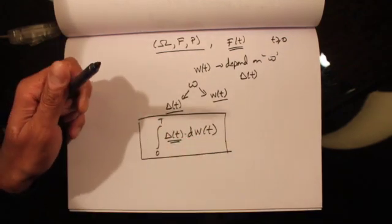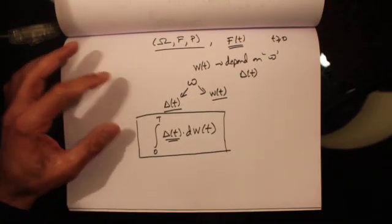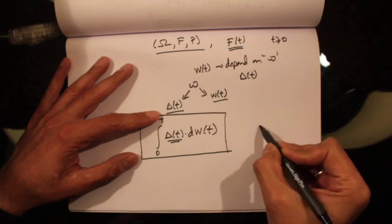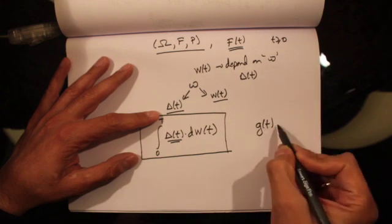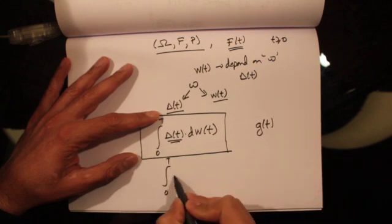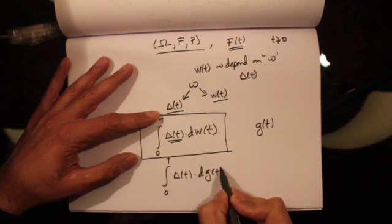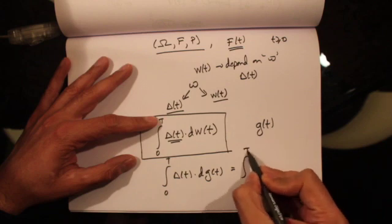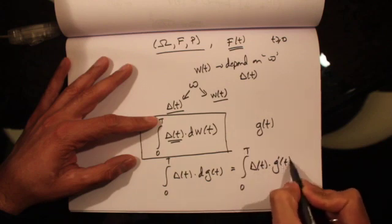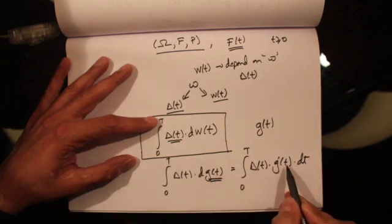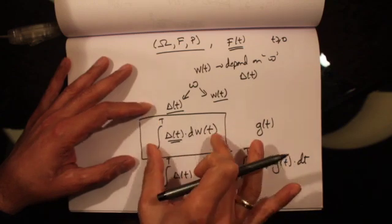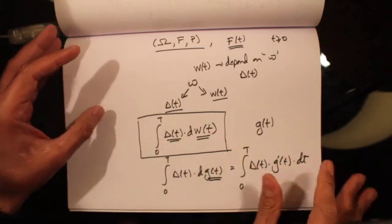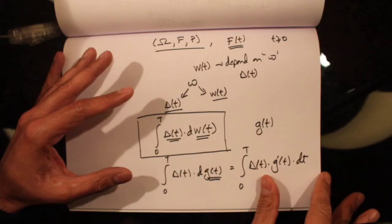In ordinary calculus, if we had a differentiable function g(t) and wanted to compute the integral from 0 to t of delta(t) dg(t), we could compute it as the integral of delta(t) g'(t) dt, because g is differentiable. But we cannot do this for Itô's integral because Brownian motion is not differentiable with respect to t. So we need to construct Itô's integral in a different way.